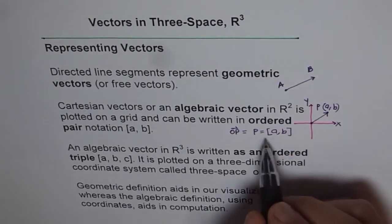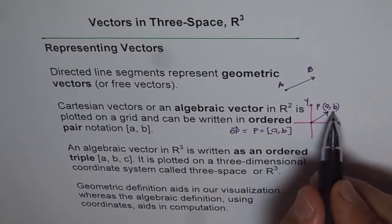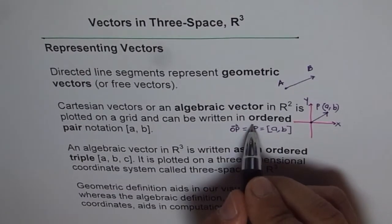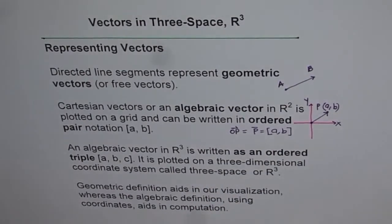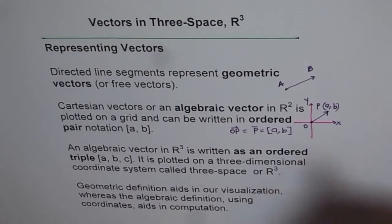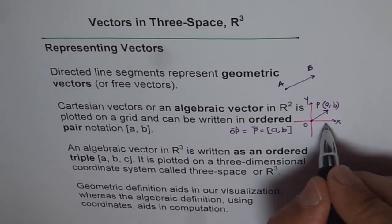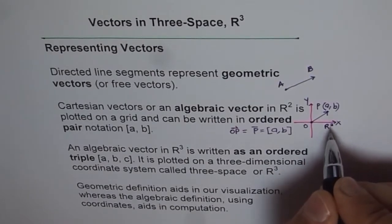At times, we will write in parenthesis this, but then we will specify that vector P is this. So that is what we used to do when we were working in R². This is in R², that is two dimension, 2D.